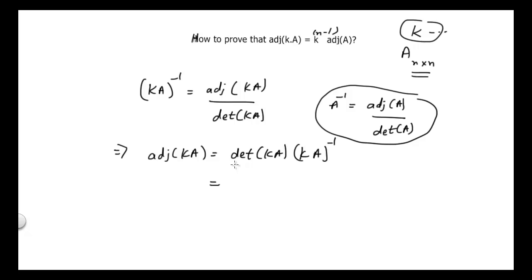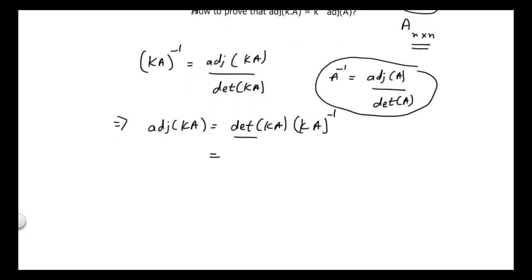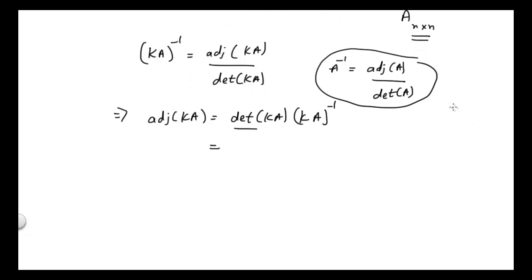Now I can write the determinant of kA in another way. There is a property regarding matrices and determinants: if we have an n cross n matrix A and multiply every element by k, then its determinant becomes k raised to the power n times the determinant of A. So determinant of kA equals k^n times determinant of A.